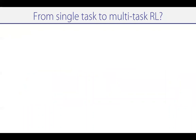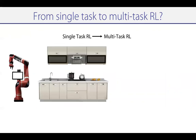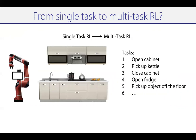Now actually building reset-free reinforcement learning methods can be quite challenging in the single task setting because exploration can be quite hard. However, we're rarely in the single task setting — we usually want to solve multiple different tasks together. So for instance, you have a robot in the kitchen. You don't want to just put the kettle into the sink, but you might also want to learn the tasks of opening the cabinet, picking up the kettle, closing the cabinet, picking up objects off the floor, and so on. The question becomes: can reset-free reinforcement learning actually be easier when you have multiple different tasks?